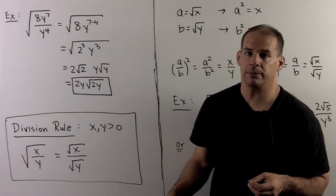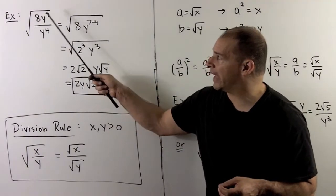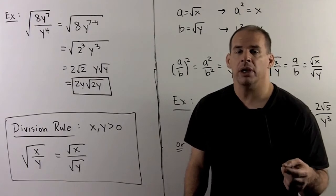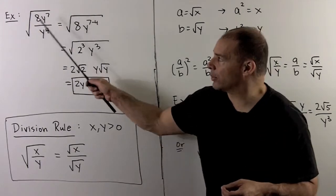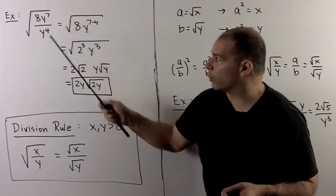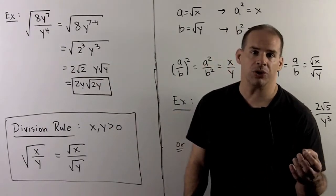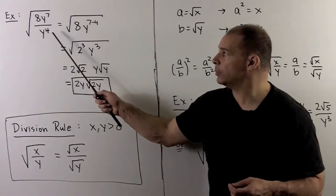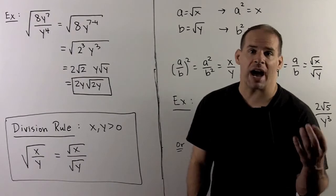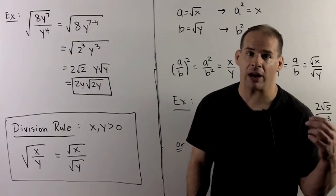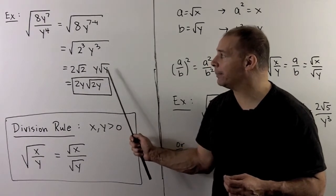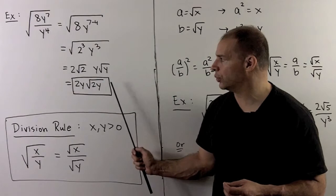A few more examples with quotients. For square root of 8y to the seventh over y to the fourth: we only have the multiplication rule, so we simplify inside the radical first. We have y to the seventh over y to the fourth; subtracting exponents gives y cubed. So we have 2 cubed times y cubed — both odd exponents. Applying the odd exponent rule gives 2 radical 2 times y radical y. Cleaning that up: 2y times radical 2y.